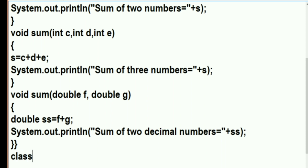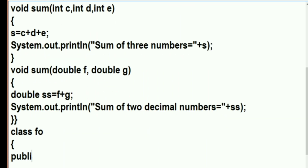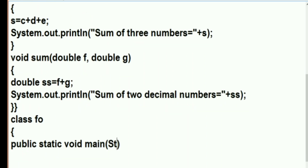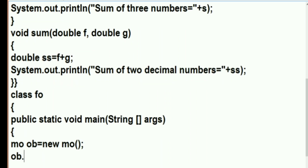Now we are going to create another class in which we will declare the main function: 'public static void main'. After the declaration of the main function, we will create an object of the previous class 'mo'. We write the class name 'mo', give a space, write the object name 'ob', then the 'new' keyword followed by 'mo()'. In this way the object is created.